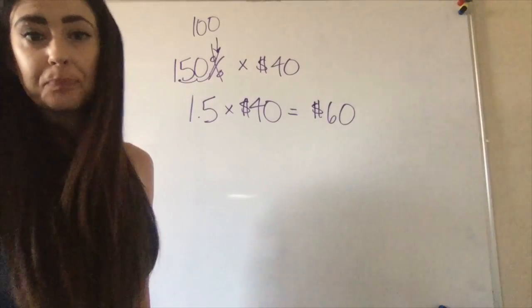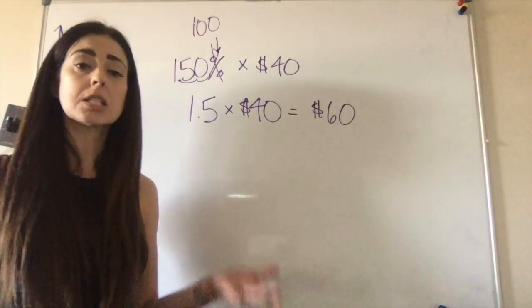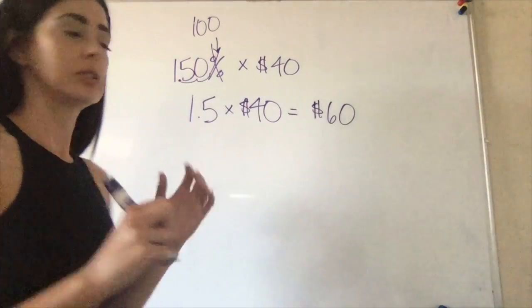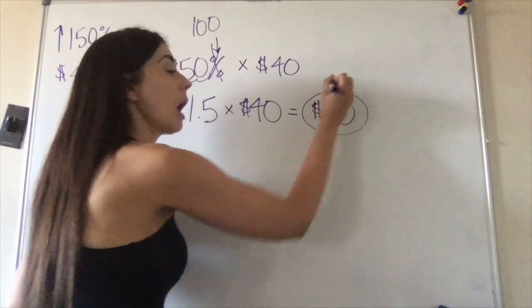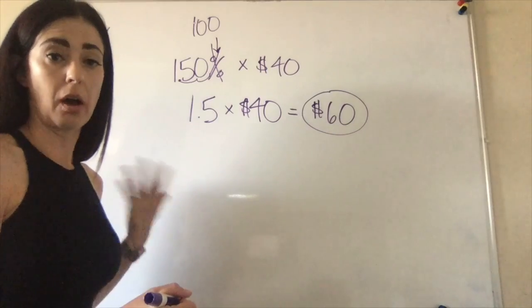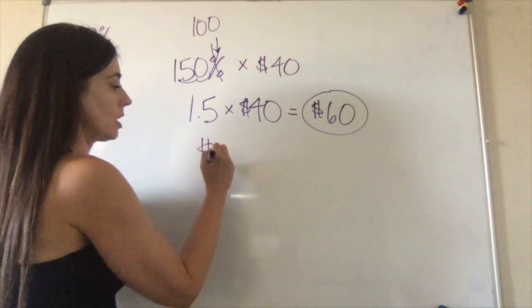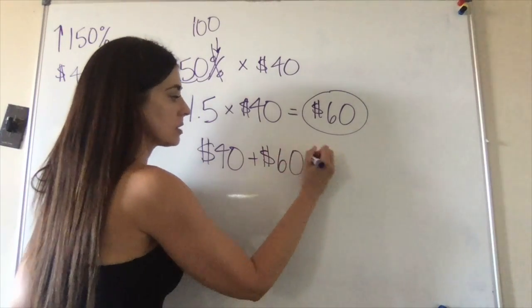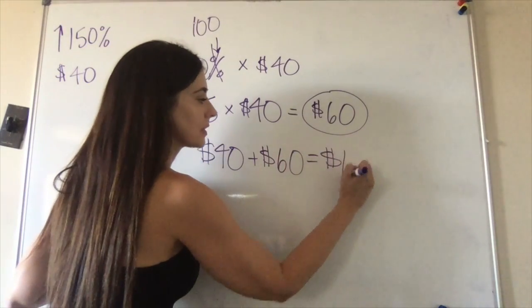...Franklin does for the dresses is a sixty dollar markup. Now, is sixty dollars the final answer? No, that's how much he marks it up, which means that we have to add it to the original cost of the dress. So the cost of the dress was forty dollars; we add the sixty dollar markup for a total of, you got it, one hundred dollars per dress.